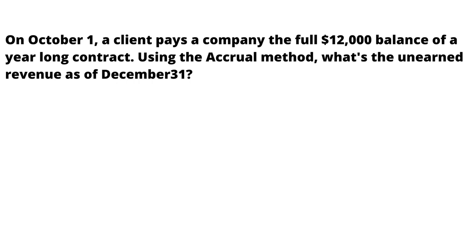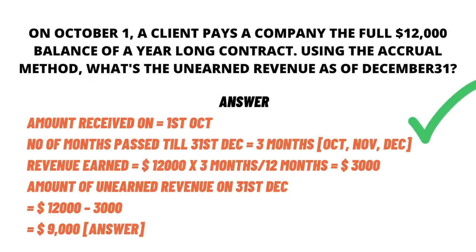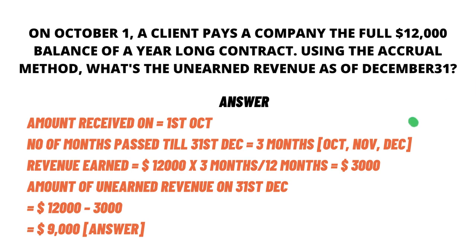The contract is given on 1st October, so we have three months: October, November, December. The amount received on 1st October is $12,000. The number of months passed till 31st December is three months. So the amount earned is $12,000 multiplied by three months divided by 12, which equals $3,000. Therefore, the unearned revenue is $12,000 minus $3,000, equal to $9,000. So this is the answer to the question.